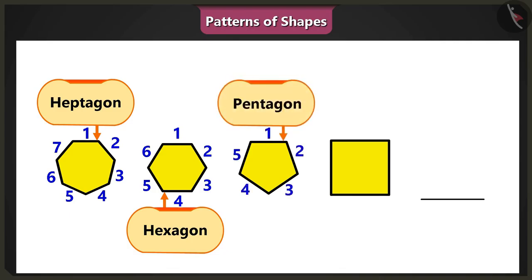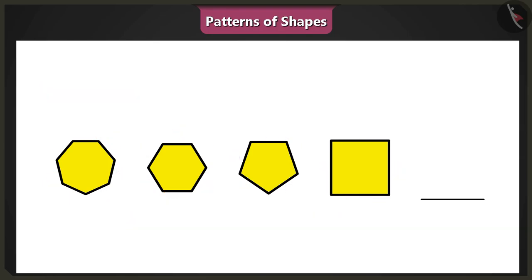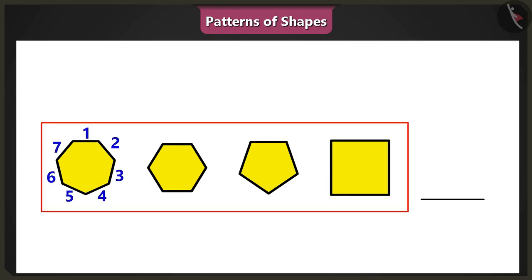Then, five-sided shape, pentagon, has been added. And finally, a four-sided shape, square, has been given. Yes, in this pattern, sides of all the shapes are in descending order.